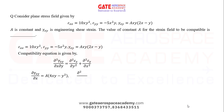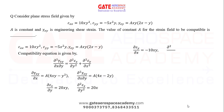Differentiating gamma_xy one more time with respect to y: ∂²gamma_xy/∂x∂y = A(4x − 2y). Differentiating epsilon_xx with respect to y twice gives ∂²epsilon_x/∂y² = 20x. Differentiating epsilon_yy with respect to x twice gives ∂²epsilon_y/∂x² = −10y. Substituting into the compatibility equation: A(4x − 2y) = 20x − 10y = 5(4x − 2y), so A = 5.